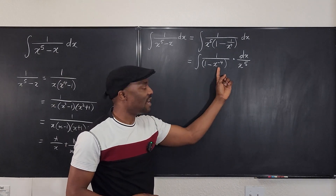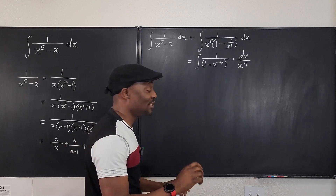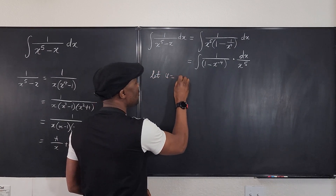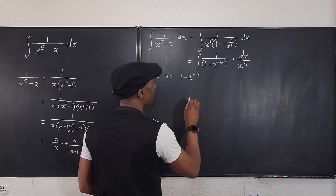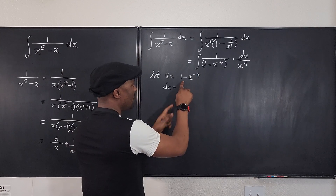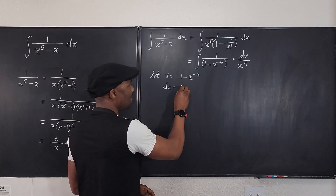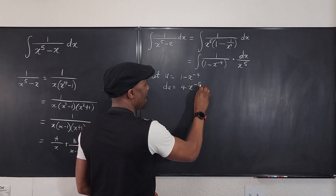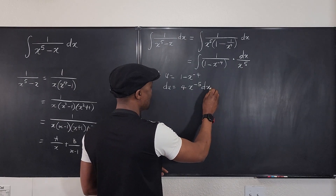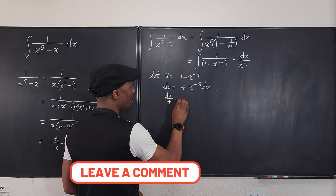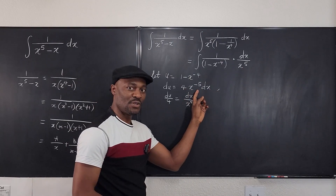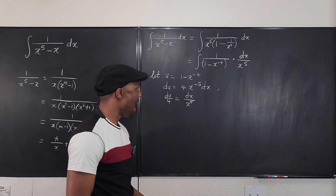Now let's make this our u — you're going to see why the strategy is so clean. Let u equal 1 minus x to the negative 4. So what is du going to be? du equals — differentiating: negative 4 times negative 1 gives us 4x to the negative 5 dx. We can rewrite this as du over 4 equals dx over x to the fifth. I've turned this into the rational expression.